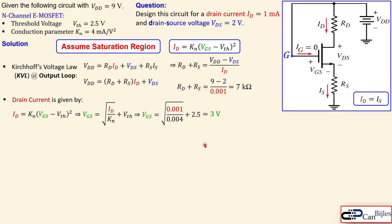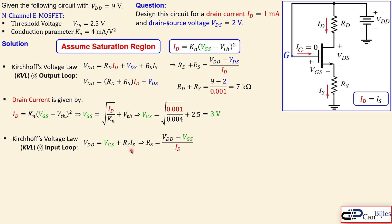Now applying KVL at the input loop: VDD equals VGS plus the voltage across RS. Since IS equals ID, we get RS equals (VDD minus VGS) divided by IS. Substituting nine minus three over one milliamp gives six kilo-ohms for RS. We now have two equations and two unknowns, so we can solve independently.